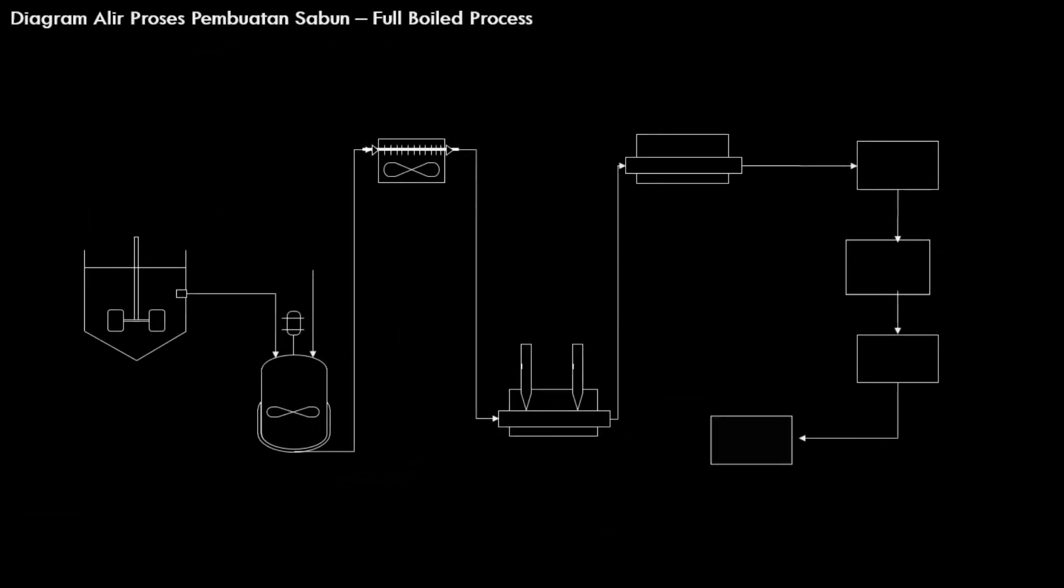Berikut adalah diagram alir proses pembuatan sabun. Proses diawali dari minyak dan larutan enauha atau alkali dimasukkan ke dalam bak terbuka berpengadu. Pada bak ini terjadi reaksi saponifikasi atau reaksi pembentukan sabun.